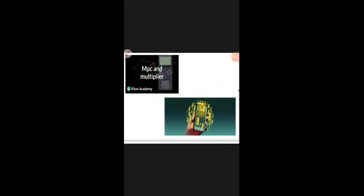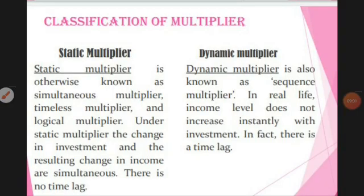There are two types of multiplier: static multiplier and dynamic multiplier. The static multiplier is also called the simultaneous multiplier or timeless multiplier. Under this, a change in investment leads to a change in income simultaneously — investment and income both change together at the same time.